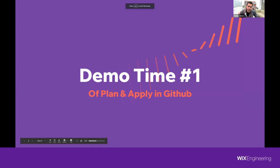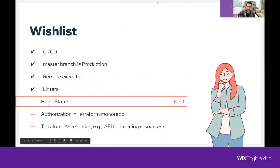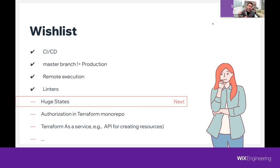What we achieved by just adding Atlantis in a very easy implementation: you get CI and CD very fast. Also the way we configured Atlantis, there is no drift with master and production, because each time you do an apply, the resource is automatically merged to production — though this is configurable. We also have remote execution now, meaning there's no differentiation between Terraform versions between one developer's machine and another. And Atlantis didn't give us linters, but we added those as GitHub Actions in our other repos.